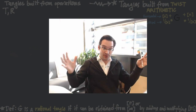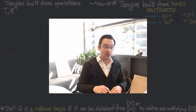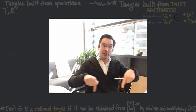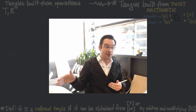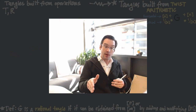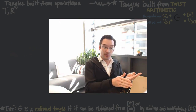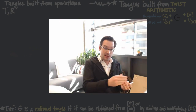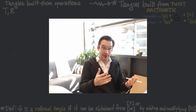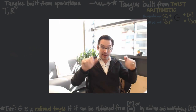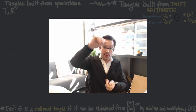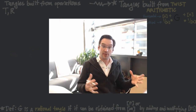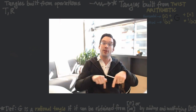Addition builds out by adding twists horizontally. Multiplication can build out a tangle by adding twists vertically. So we now have a new definition of rational tangles: we define g to be a rational tangle if we can get g by starting from an empty tangle — either horizontal or vertical — and then adding and multiplying twists. Our basic twist is either the positive twist 1 or the negative twist minus 1. By adding on the left or right, we build out horizontally; by multiplying on top and bottom, we build out vertically.